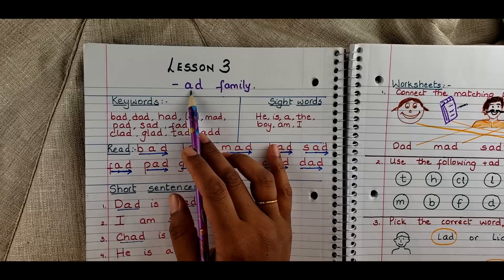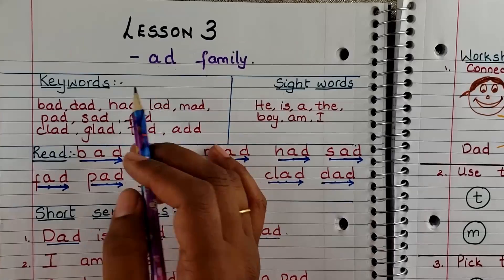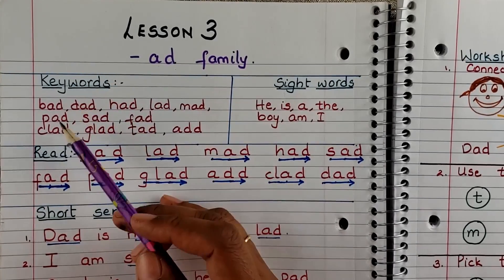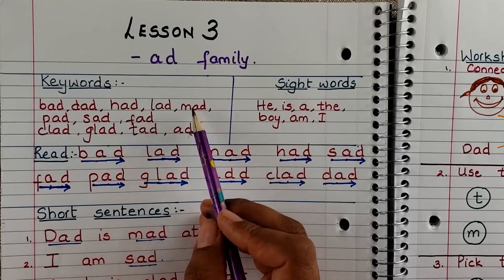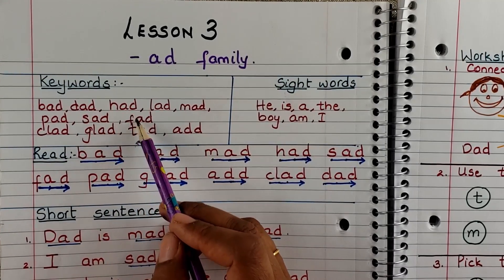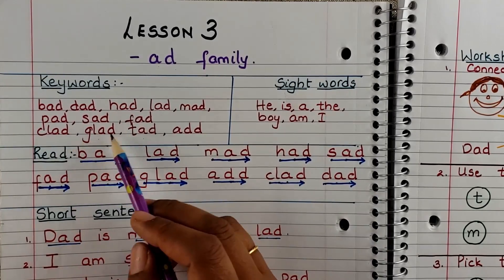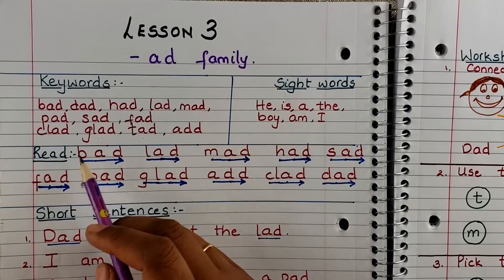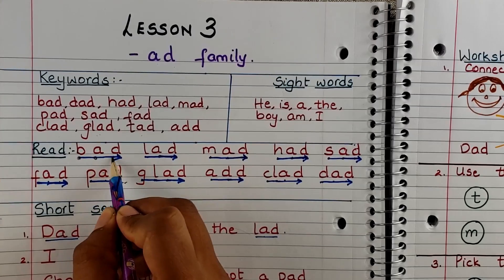Ad family. The family words are: bad, dad, had, lad, mad, pad, sad, fad, had. Four-letter words are clad and glad.